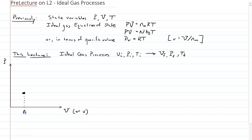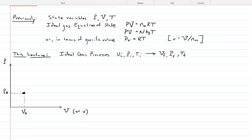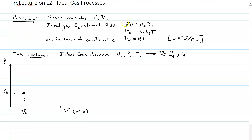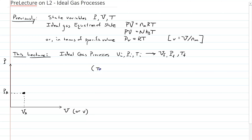Let's call this point A — it has some volume Va and some pressure Pa. If the gas is in this state, it has some pressure and volume, and it also has a temperature Ta. I don't need three axes for Pa, Va, and Ta, because I always know it obeys the equation of state PV = NmRT. So if I know the pressure and the volume, I can determine the temperature. Temperature does not need to be plotted because it's implied by the ideal gas law.